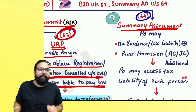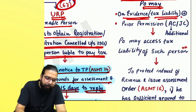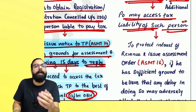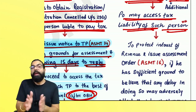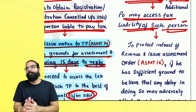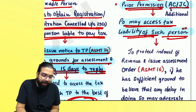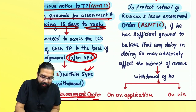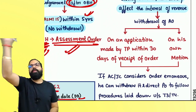The next one is summary assessment — section 64 — which means quick assessment done in shortcut. If the proper officer has evidence that there is a tax liability, and the proper officer has taken prior permission of the Additional Commissioner or Joint Commissioner, then he can assess the tax liability of such person. For example, a transporter taking goods who says he doesn't know who the owner is, or a warehouse keeper who says the same — in that scenario, assessment of the transporter or warehouse keeper will be done. The proper officer will issue an assessment order in ASMT-16 if he has sufficient ground to believe that any delay will adversely affect the interest of revenue.